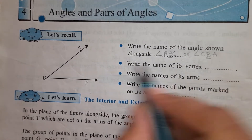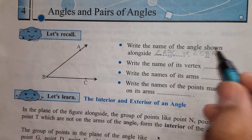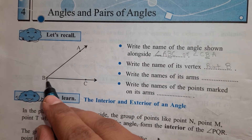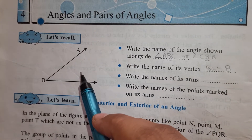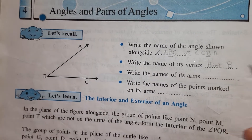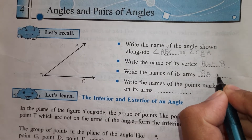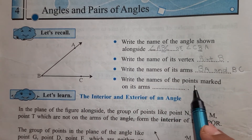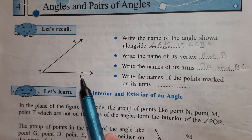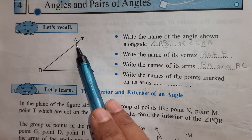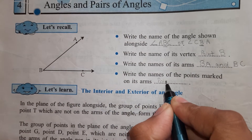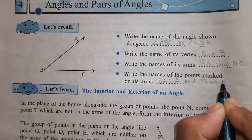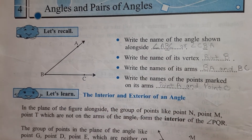Now, write the name of its vertex. Vertex means this point — vertex is point B. Write the names of its arms: B, A and B, C are the two arms of the angle. Write the names of the points marked on its arms — the points are A and C. So point A and point C are present on the arms of the angle.